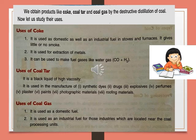After destructive distillation of coal, we obtain products like coke, coal tar, and coal gas. Uses of coke: coke is used as a domestic as well as an industrial fuel in stoves and furnaces. It gives little or no smoke on burning. It is used for the extraction of metals from deep under the earth. It can also be used to make fuel like water gas, that is CO plus H₂.